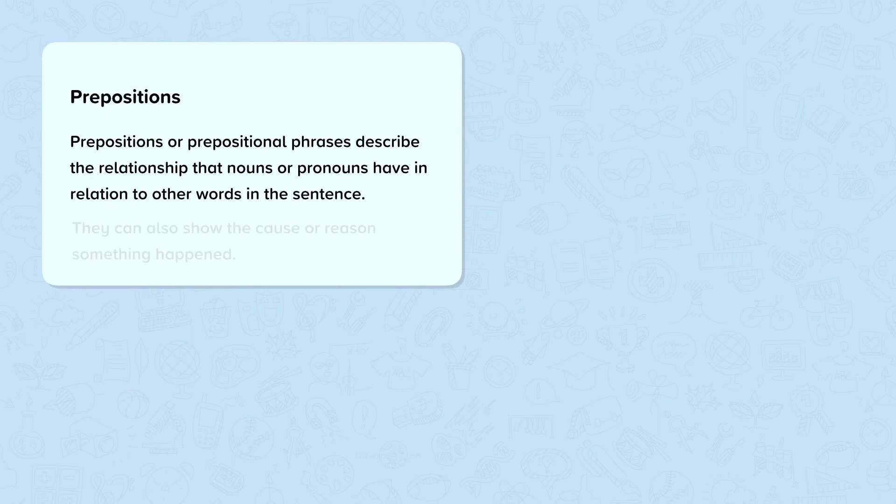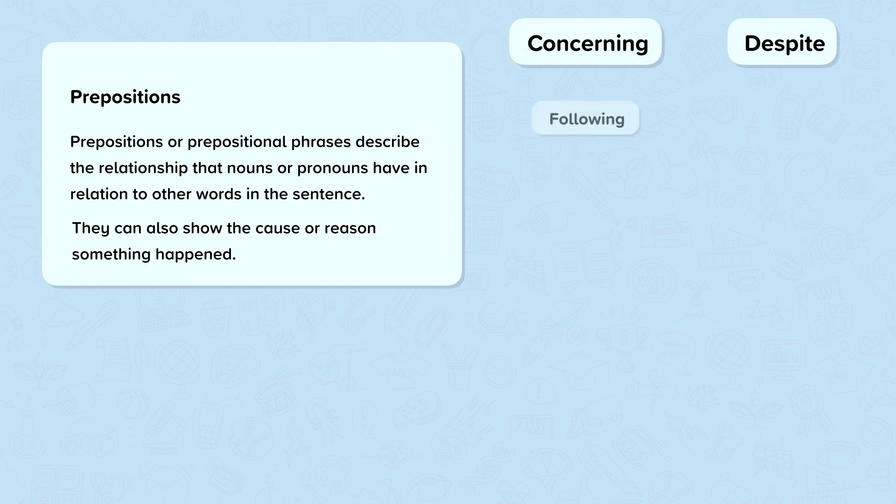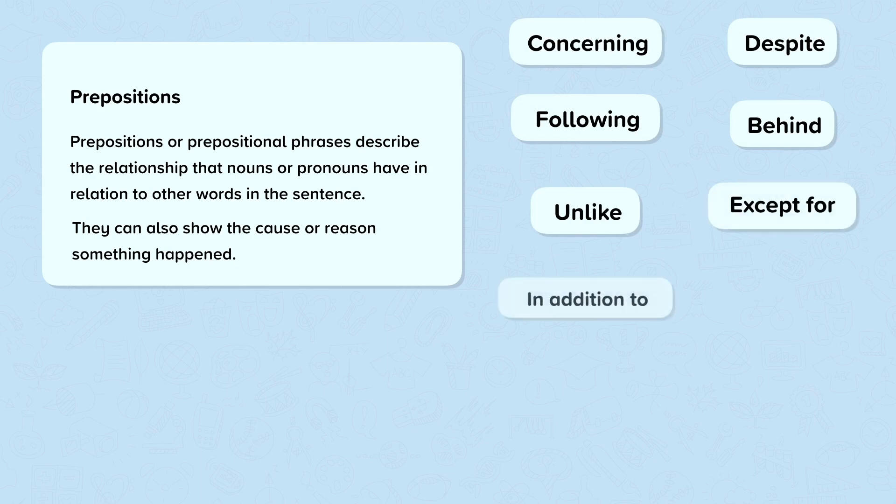Prepositions can also show the cause or reason that something happened. Some examples of prepositions which show cause or reason include concerning, despite, following, behind, unlike, except for, in addition to, and instead of.